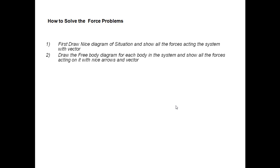Second, draw the diagrams of each body in the system and show all the forces acting with nice arrows and vectors. In a system we may have two or three bodies. Take each body separately and draw a free body diagram. A free body diagram is a diagram where we show a single body and show all the forces acting on it, with nice arrows and vectors.